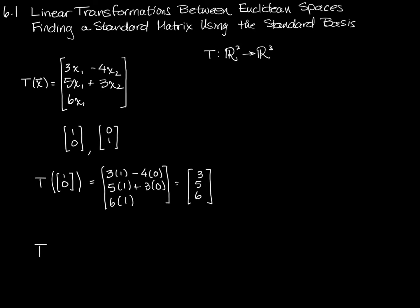And now I'm going to repeat the process, but for the other standard basis vector. That's going to give me 3 times 0 minus 4 times 1, 5 times 0 plus 3 times 1, and 6 times 0 plus 0. And that is [-4, 3, 0].